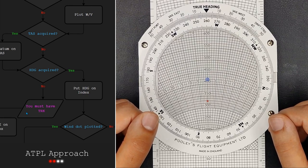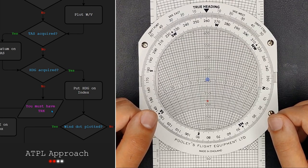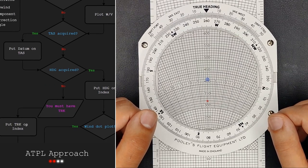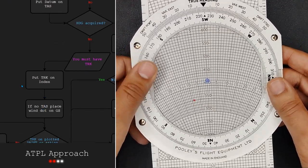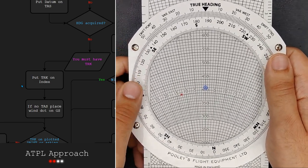As we don't have the heading, we go down here to this statement, which tells us that we must have the track. Okay, now we put the track of 188 degrees under the index.